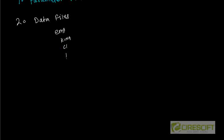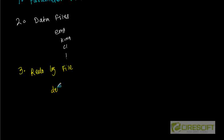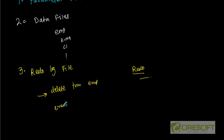Number three is the redo log file. The redo log files are basically the transaction logs of the database. Virtually every operation you perform on an Oracle database generates some amount of redo. For example, when I do a DELETE FROM EMP, the redo log file will create a transaction saying the employee table was deleted at this point in time. Similarly, if I do CREATE TABLE X, the redo log file will record that table X was created at that point.